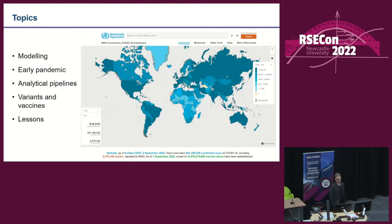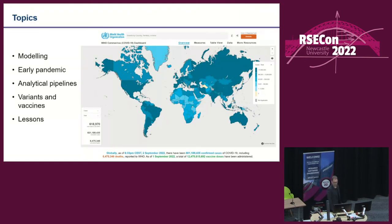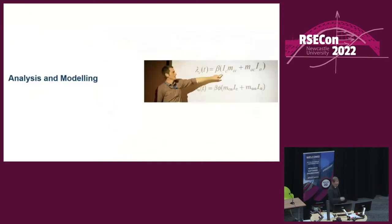A lot of the analyses we did — particularly for the UK, but also globally — we had to repeat, if not every day, then every few days or every week, with very large amounts of data coming in, and that was an engineering effort. I'll briefly touch on 2021 variants and vaccines, though it's an enormous amount of work, and sum up with some lessons learned. But first, a little bit about epidemiological modelling.